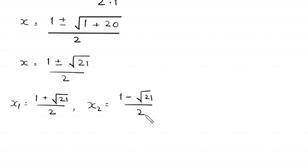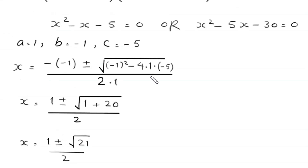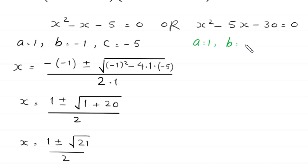Now, to find the other two solutions, we solve the quadratic equation x squared minus 5x minus 30 equals 0. This is not factorable, so we solve it by the quadratic formula. In this equation, a is equal to 1, b is equal to negative 5, and c is equal to negative 30.